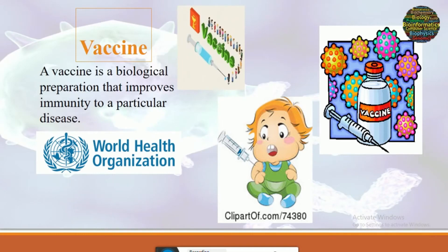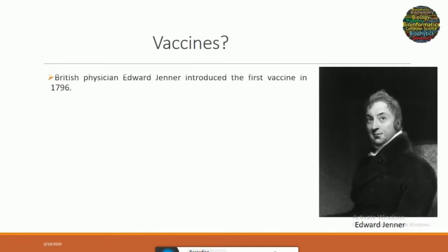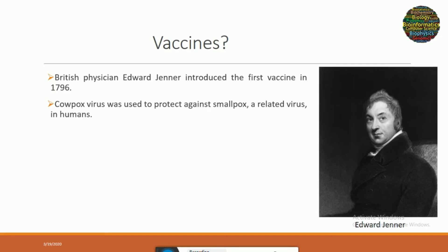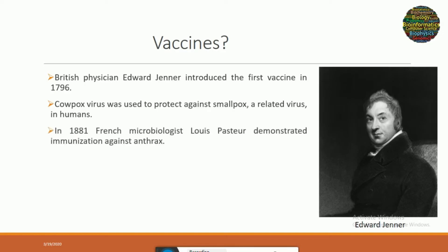So what is a vaccine? A vaccine is a biological preparation that improves immunity to a particular disease. The first vaccine was developed by a British physician Edward Jenner in 1796. Edward Jenner used a cowpox virus to protect against smallpox virus, a related virus that causes disease in humans. Then in 1881, a French microbiologist Louis Pasteur demonstrated immunization against anthrax.